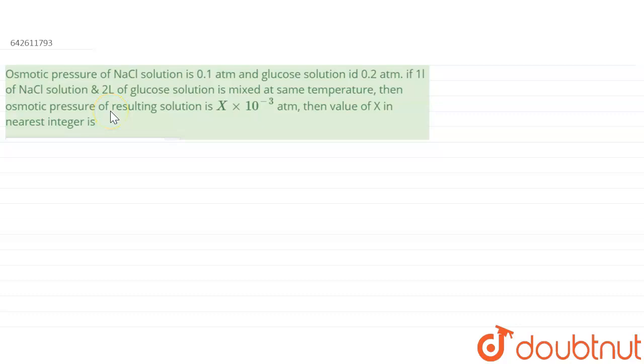they have said is osmotic pressure of NaCl solution is 0.1 atm and that of glucose solution is 0.2 atm. If one liter of NaCl and two liters of glucose is mixed at same temperature...